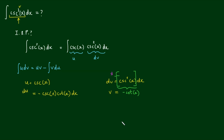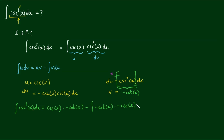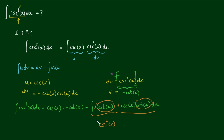Now that we have all our parts, we apply integration by parts: the integral of cosec³(x) dx equals u times v, which is cosec(x) times negative cot(x), minus the integral of v times du, which is negative cot(x) times negative cosec(x) cot(x). The two negatives cancel to give a positive, and we can combine the cot terms into cot²(x), leaving the integral of cot²(x) times cosec(x) dx.